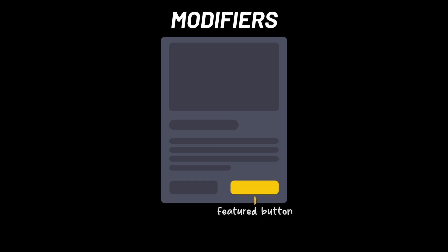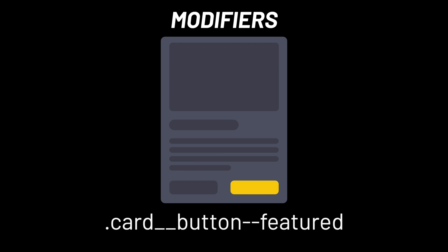Next, we have Modifiers. A modifier is like a tag that indicates something is slightly different — it's used when you want to change how something looks or works. One of our buttons might be a special button, like a buy now button. A modifier shows that the button is different from the regular button in some way. In our example, we want a different background color to highlight the difference. So modifiers are like adjectives, describing how something changes while still being part of the block or element. Let's target our special button and call it 'card__button--featured'.